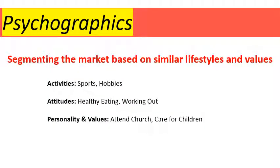Now psychographics — this is when we segment the market based upon similar lifestyles and values. Examples include what activities you participate in, like sports or hobbies. People who play baseball in the evenings will receive a different marketing mix from baseball companies than people who don't. Attitudes around healthy eating, working out, personality and values, whether you go to church, or whether you care for children at home — these are lifestyles and values that companies key in on to reach people most likely to buy their product.